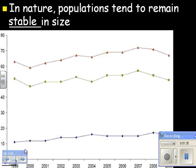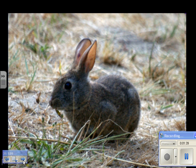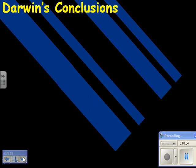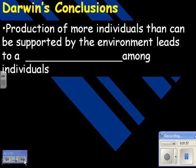At least unless the environment is destroyed. But in general, populations stay pretty stable. The reason is because environmental resources are limited — this bunny only has so much grass to eat. And if it has to share the grass with a hundred other bunnies, then some of them are going to die. Which is why bunnies don't share.